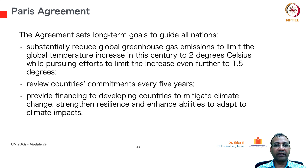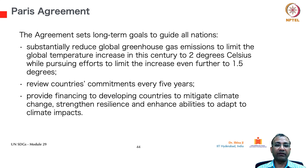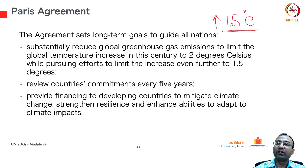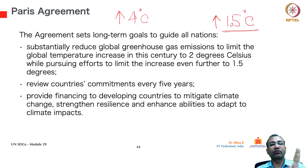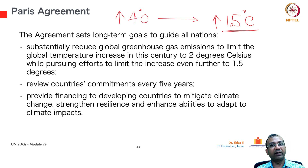The agreement sets long-term goals to guide all nations: substantially reduce global greenhouse gas emissions to limit the global temperature increase in this century to 2 degrees Celsius, while pursuing efforts to limit the increase even further to 1.5 degrees. Currently it is going at the rate of around 4 degrees centigrade change, but the effort is to minimize that and bring it to 1.5 degrees change from the earlier baseline.